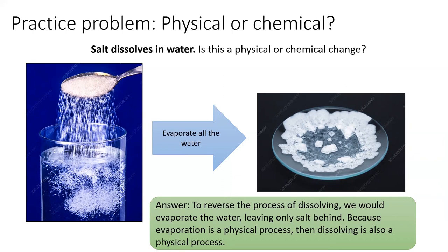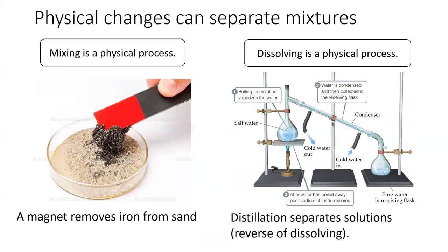In general, when we make or separate out mixtures, we're using physical changes to do so. There are many ways that mixtures can be separated, and the separation of all mixtures is a physical change. A mixture of sand and iron can be separated simply using a magnet. However, solutions and mixtures of liquids need a more complicated process of separation, such as distillation.